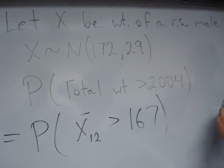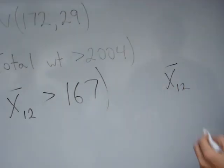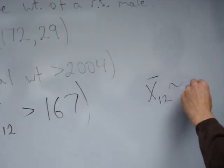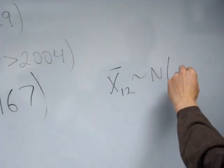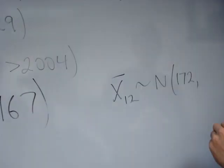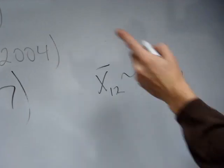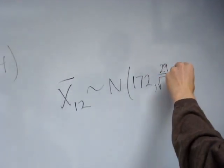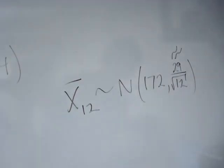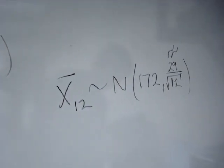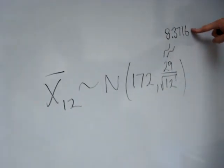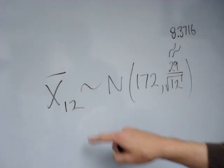Well, what do we know about x-bar 12? It's not normal 172, 29. X-bar 12, we know, is normal with mean 172, same as the original random variable. But the standard deviation is not 29. It's 29 divided by the square root of 12. And we've got an approximation for that, it's 8.3716. So this is the approximate standard deviation of x-bar 12.